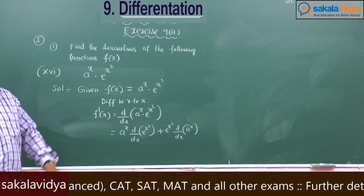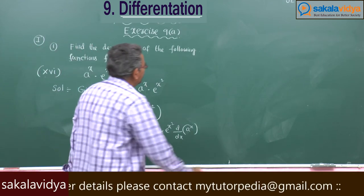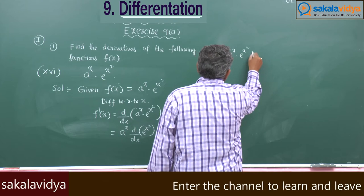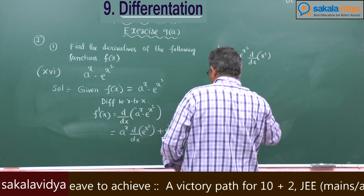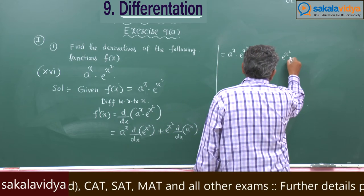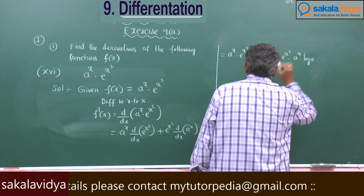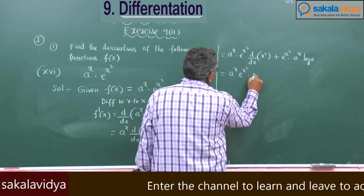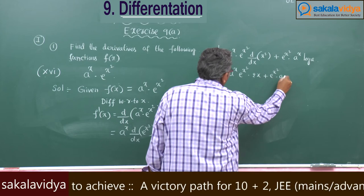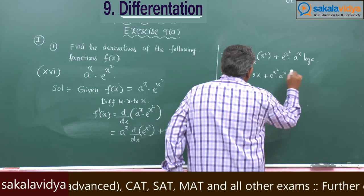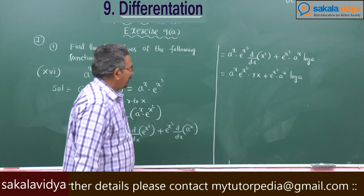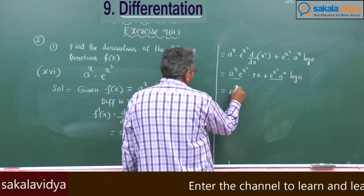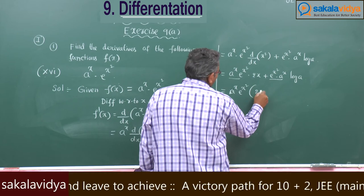What is the derivative of e^(x²)? It is e^(x²) · 2x by the chain rule. So f'(x) = aˣ · e^(x²) · 2x + e^(x²) · aˣ · log a. Taking aˣ · e^(x²) out as common factor, we get f'(x) = aˣ · e^(x²) · (2x + log a).